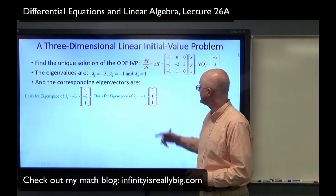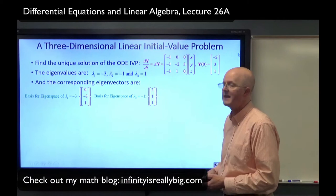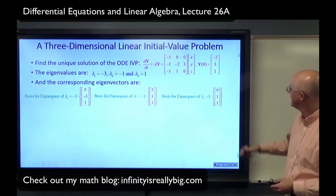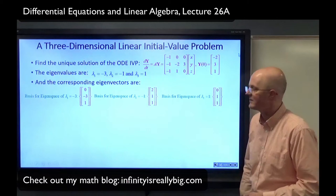The corresponding eigenvectors, solved with technology, are as follows. An eigenvector for eigenvalue negative 3 is (0, −3, 1), or any non-zero multiple — a one-dimensional eigenspace, a line through the origin in 3D space. A basis for the eigenspace of lambda 2 is (2, 1, 1), again a one-dimensional eigenspace. And for lambda 3, a basis for its eigenspace is (0, 1, 1), that one vector or any non-zero multiple of it.